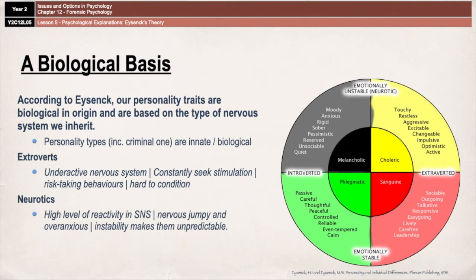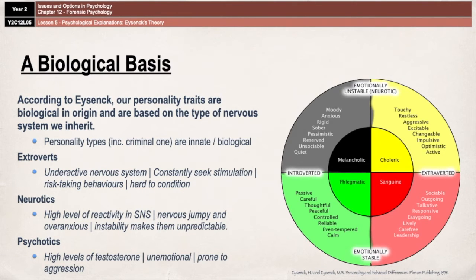Neurotics have high levels of reactivity in the sympathetic nervous system. If you think back to your biopsychology lessons, the sympathetic nervous system is involved in your stress response. So having high levels of reactivity effectively means that people who are neurotic respond very quickly to situations of threat — they have an oversensitive fight-or-flight response. They are overly nervous, jumpy, and over-anxious, and they have a general instability that makes them very unpredictable in terms of their behaviour. Finally, psychotics are thought to have high levels of testosterone, be unemotional and lacking in empathy, and be prone to aggressive behaviours.